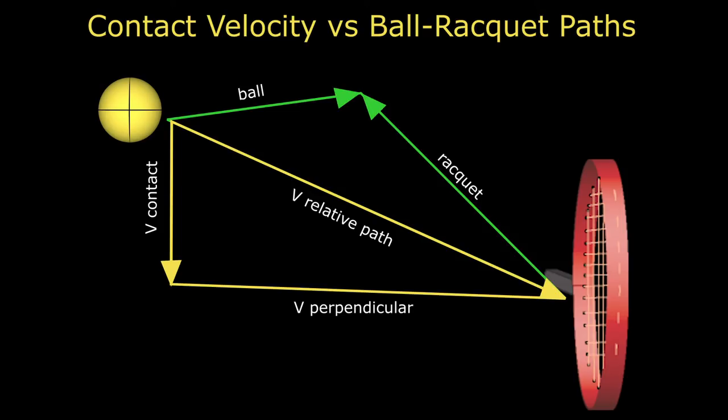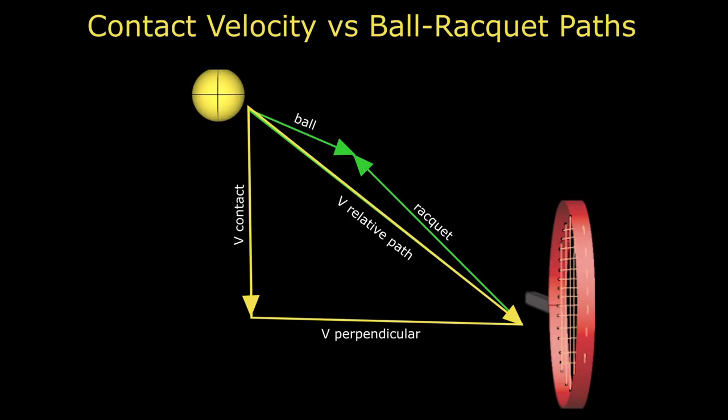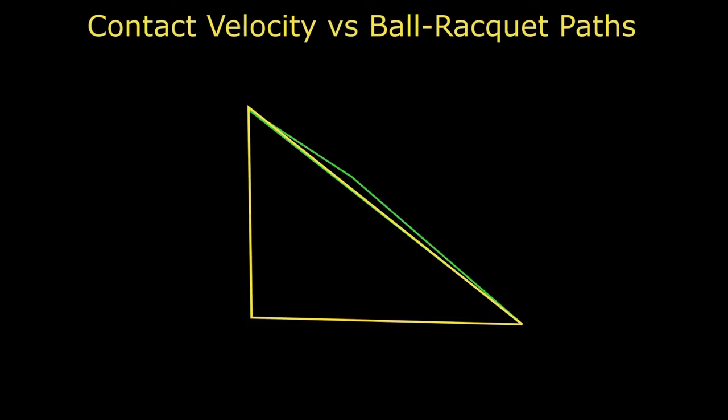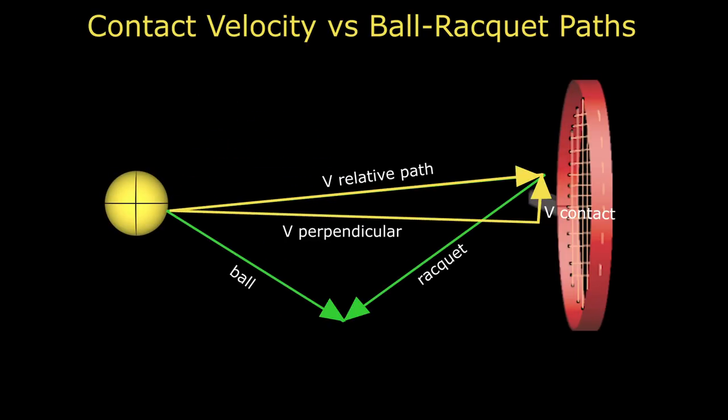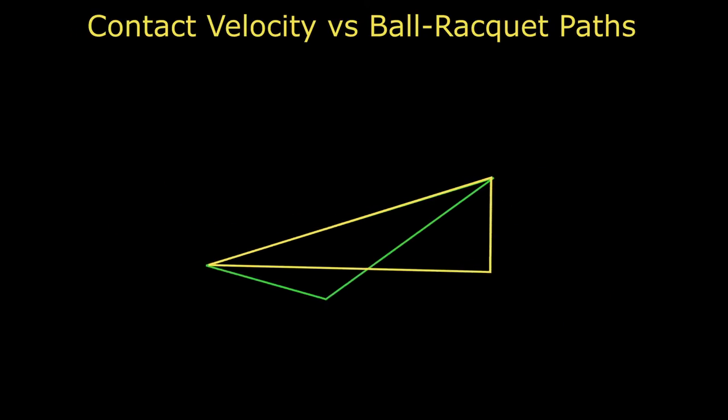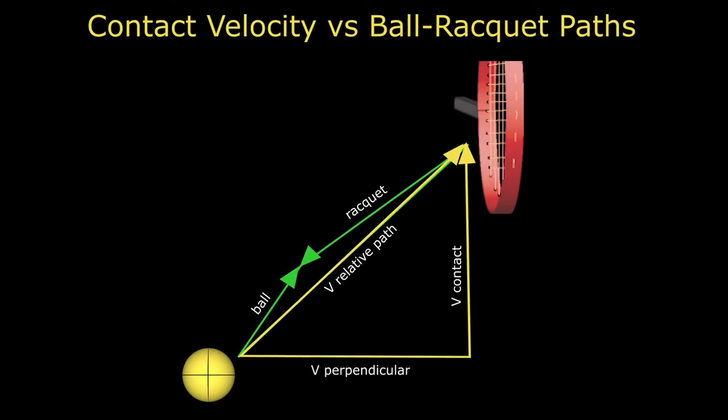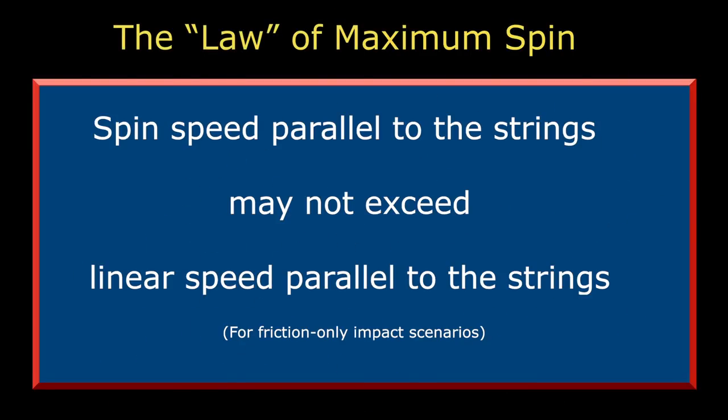But as we have seen, sometimes just swinging upward or faster won't result in the spin you expect. The incident ball and racket paths can add to, subtract from, or cancel each other in creating contact velocity. And any outgoing spin created using the contact velocity raw material is limited by the law of maximum spin, which forbids spin speed to exceed linear speed for friction-only conditions.